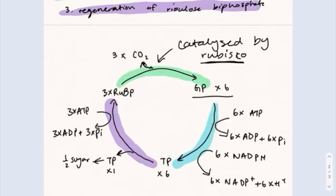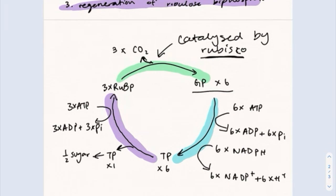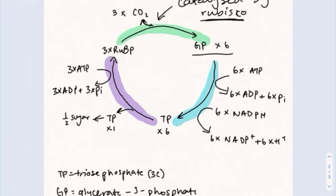So in step 2, the glycerate-3-phosphate is converted into triose phosphate using NADPH and ATP via a redox reaction, meaning that one species gains hydrogen and the other species loses the hydrogen. So NADPH is a cofactor, which is basically just a molecule that assists in biochemical reactions. So in this specific reaction, it works as a reducing agent, meaning that it reduces the GP whilst being oxidized itself.